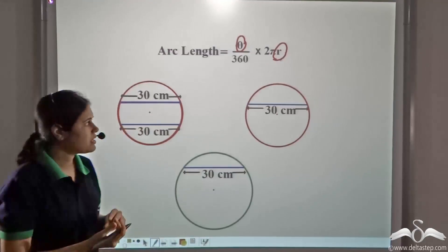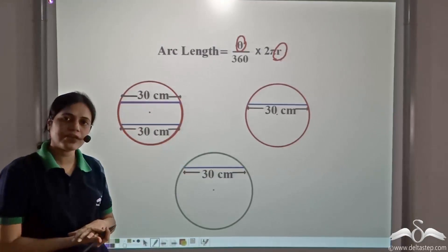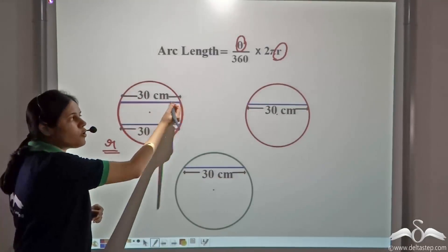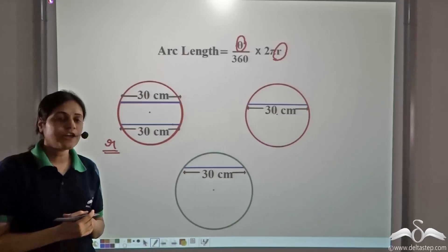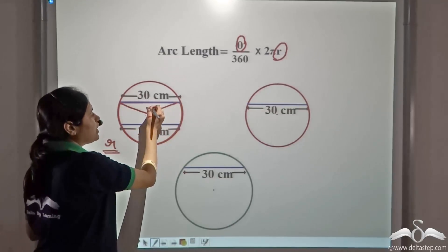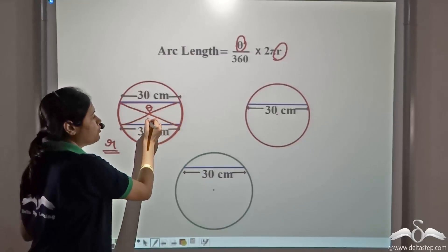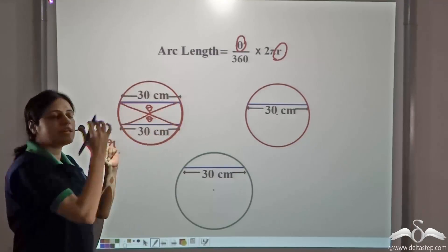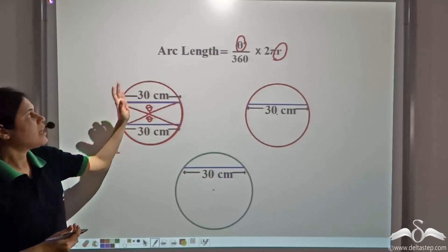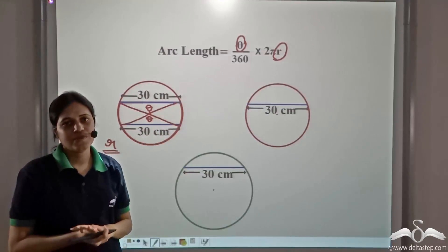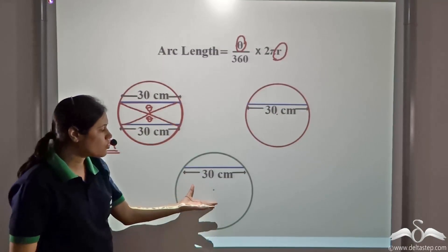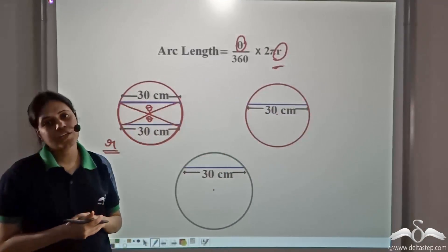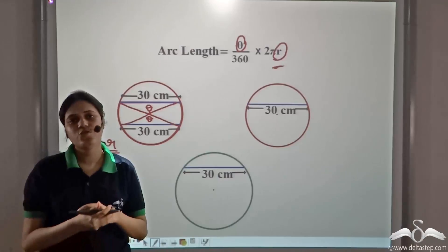In the first two cases, he cut arcs from the same circle, so r was the same. Also, he took equal chords of 30 centimeters each. We know that equal chords subtend equal angles at the centre — this has already been proved. So theta, the angle subtended by the chords and their corresponding arcs, was also the same. Hence the arc length was the same. But in the third case, he used a coil with a different radius, so r was not the same — hence he got an arc of a different length and failed to make an identical lamp.